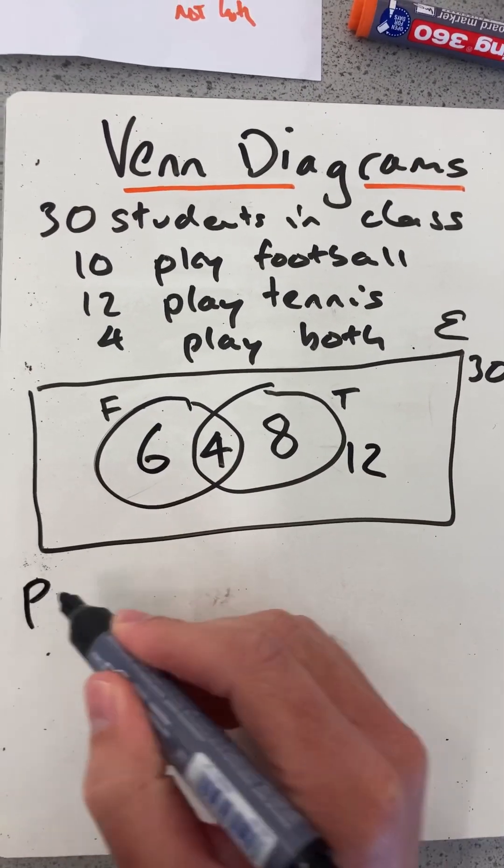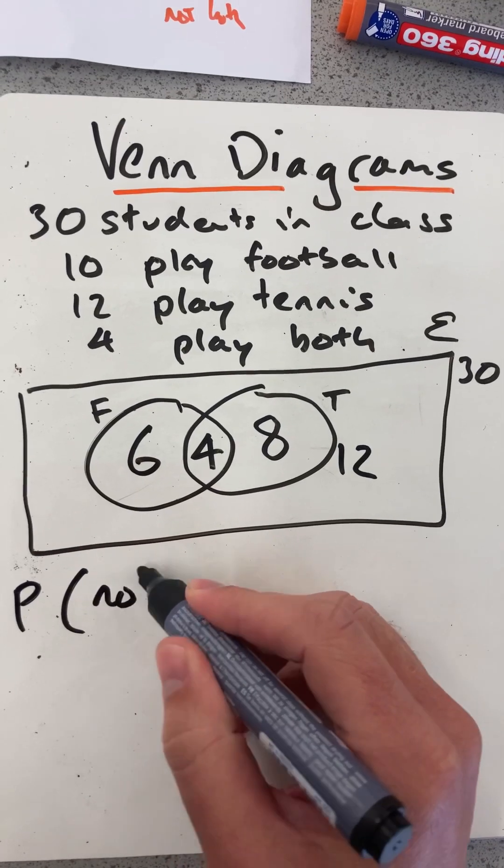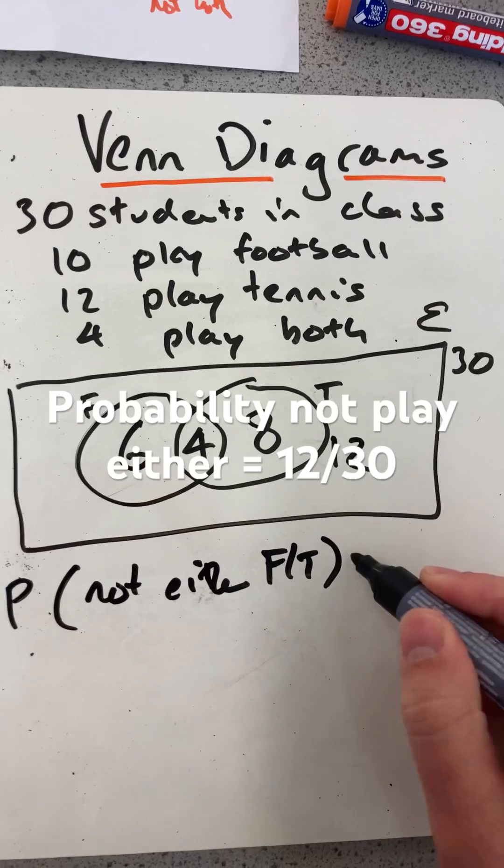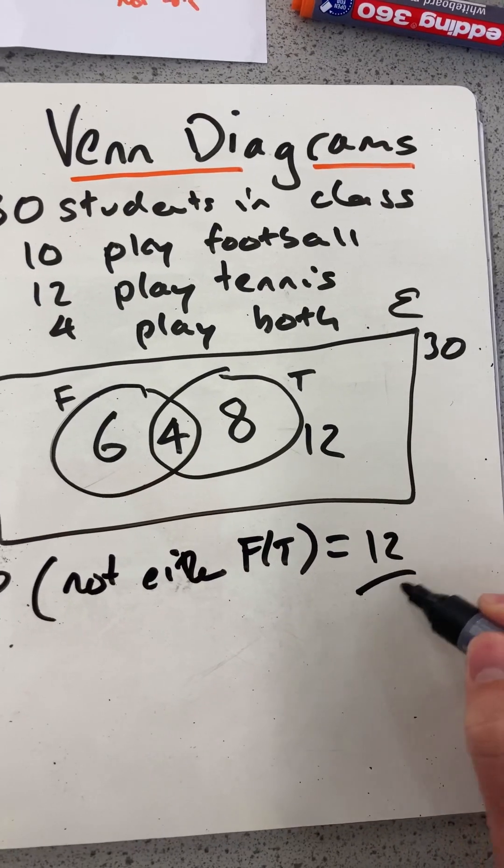Now, what about the probability of them not playing either football or tennis? Well, that's the 12 out of 30.